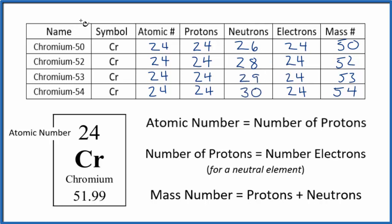So again, the only thing that's different with these isotopes of chromium is the number of neutrons and therefore the mass number. If we had a block of chromium, all of these isotopes would be present. Some atoms would be chromium 50 with 26 neutrons. Some atoms would be chromium 54 with 30 neutrons. They'd all have the same number of protons and electrons.